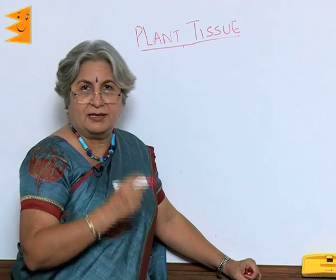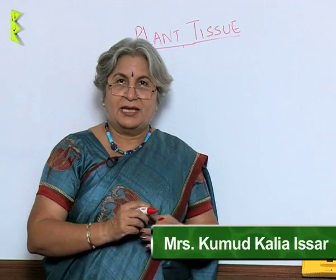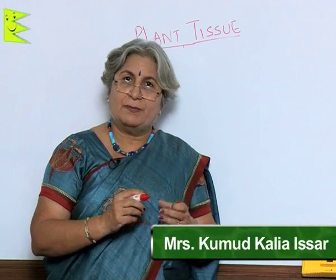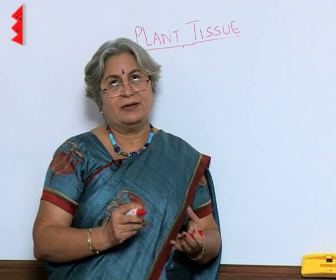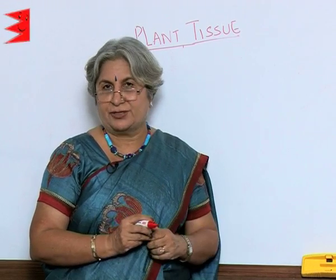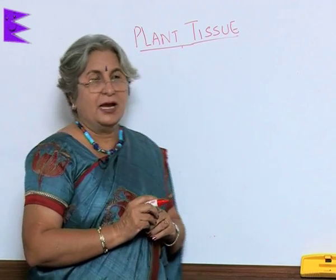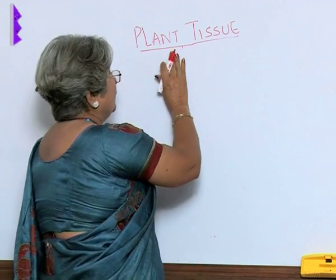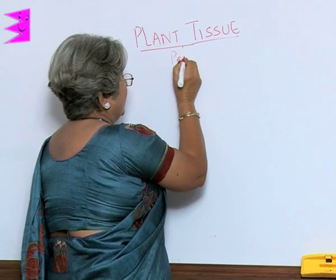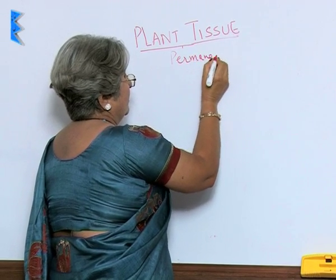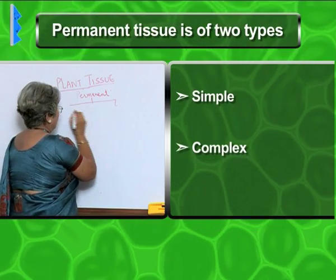Now, what about the other cells that stop dividing? They develop a specialized structure so that they can perform a specific function. These are the permanent tissue, and the permanent tissue is of two types again: permanent simple and complex.